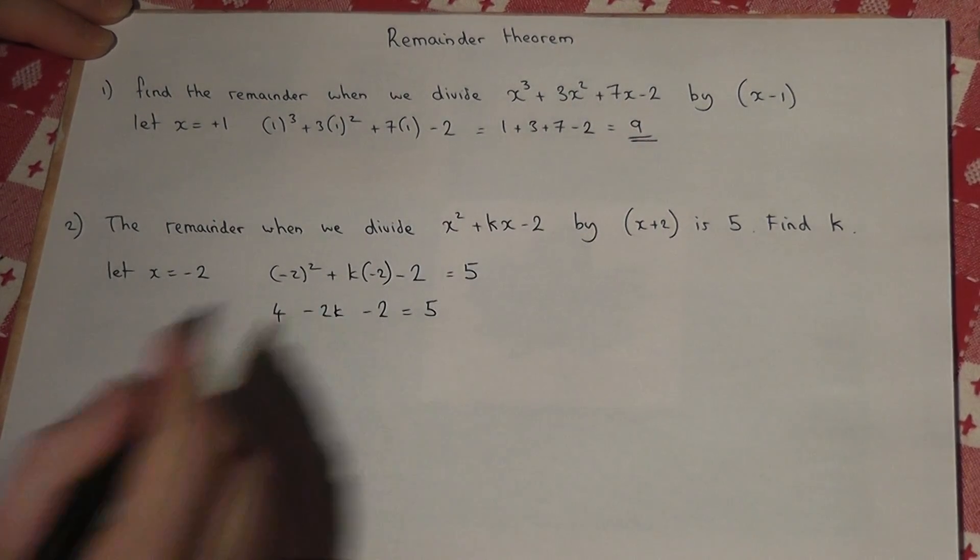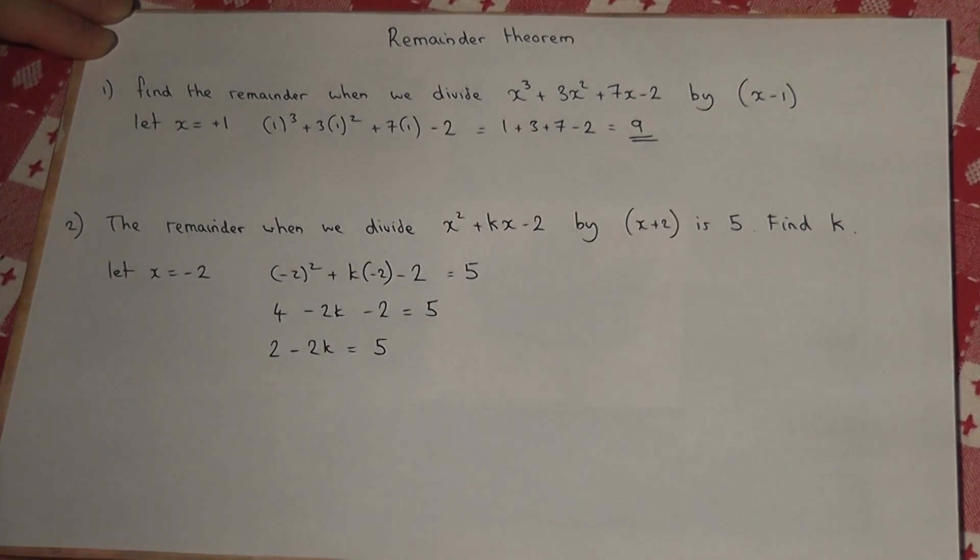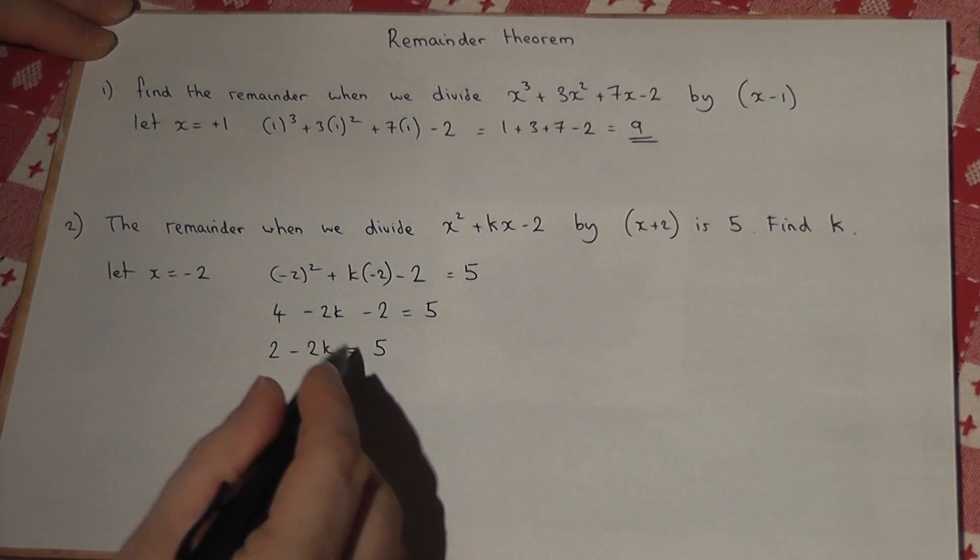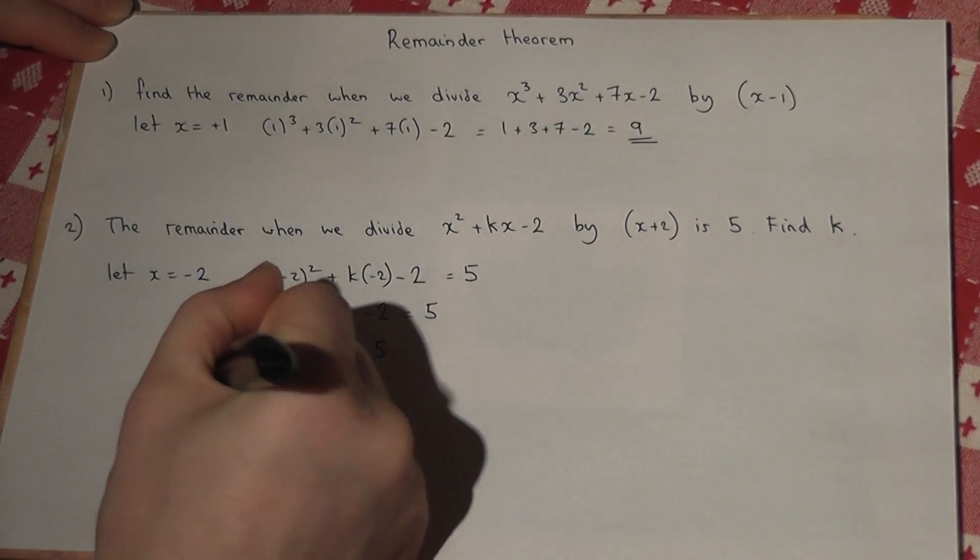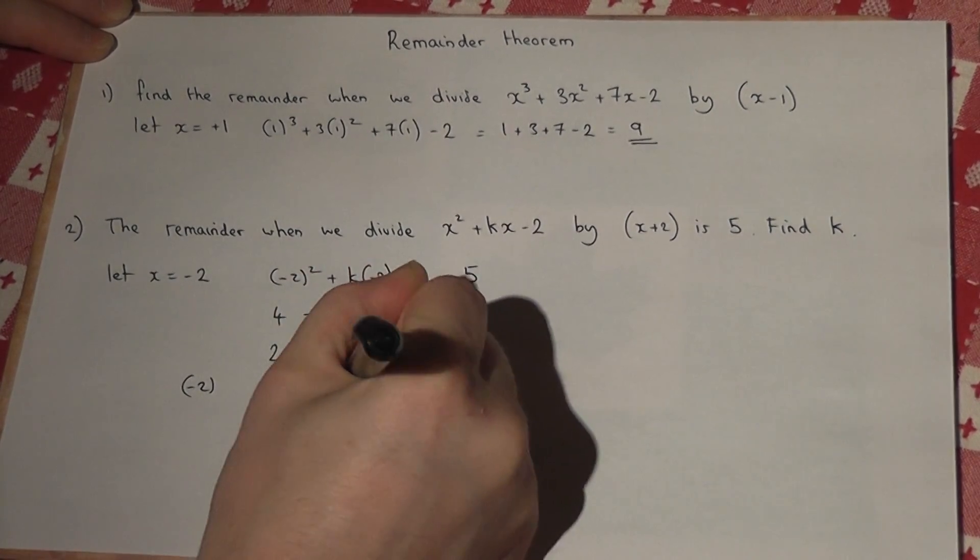4 take 2 is 2, so 2 take away 2k is 5. If I take away 2 from both sides, minus 2k equals 3.